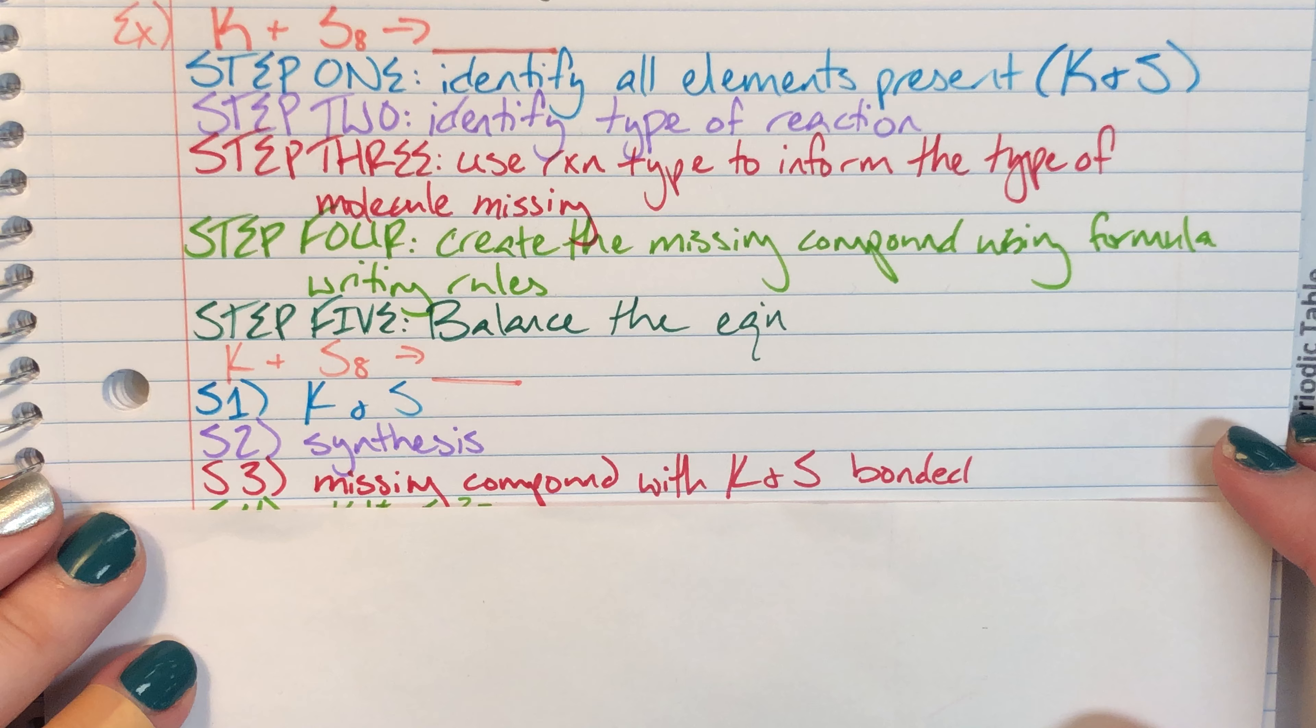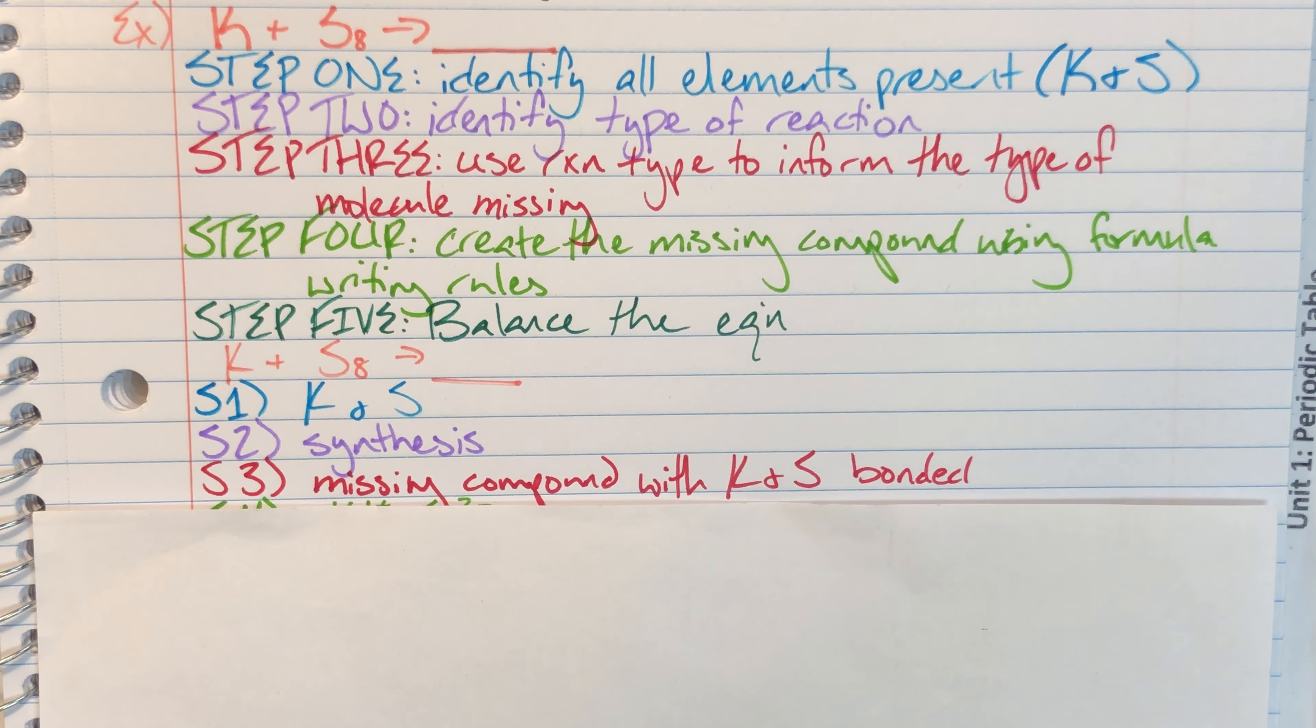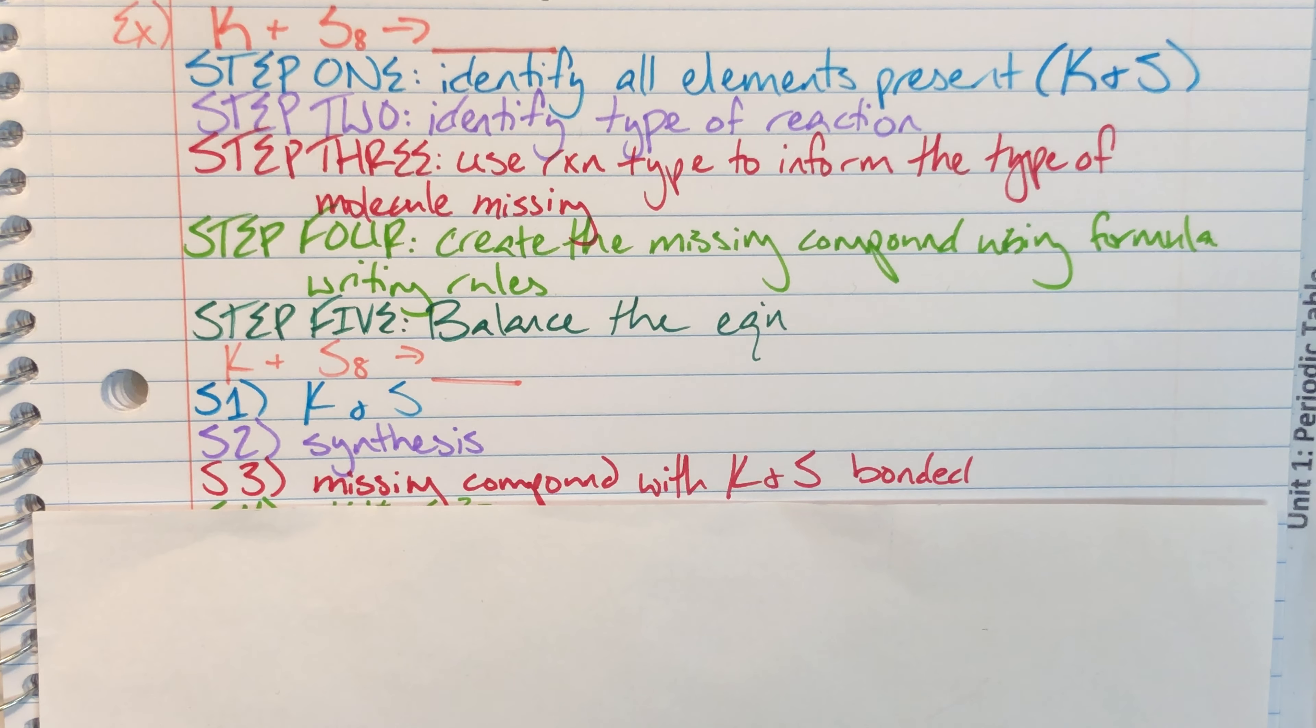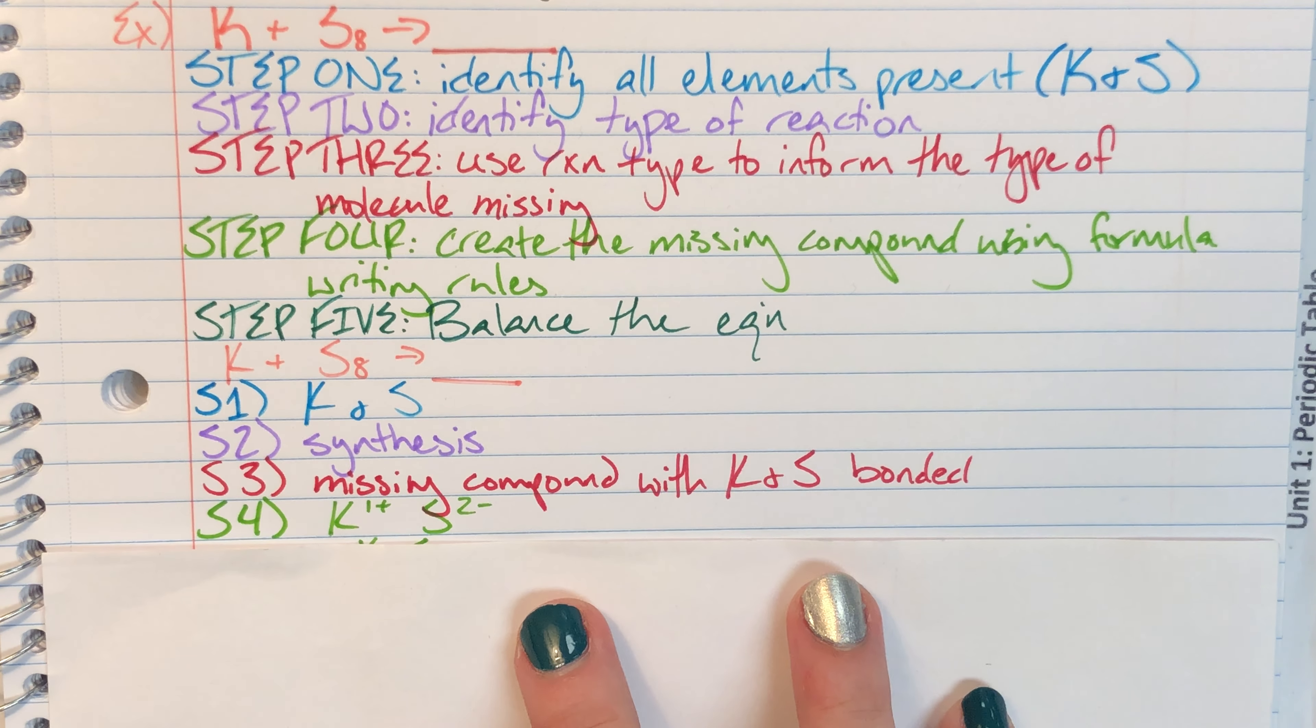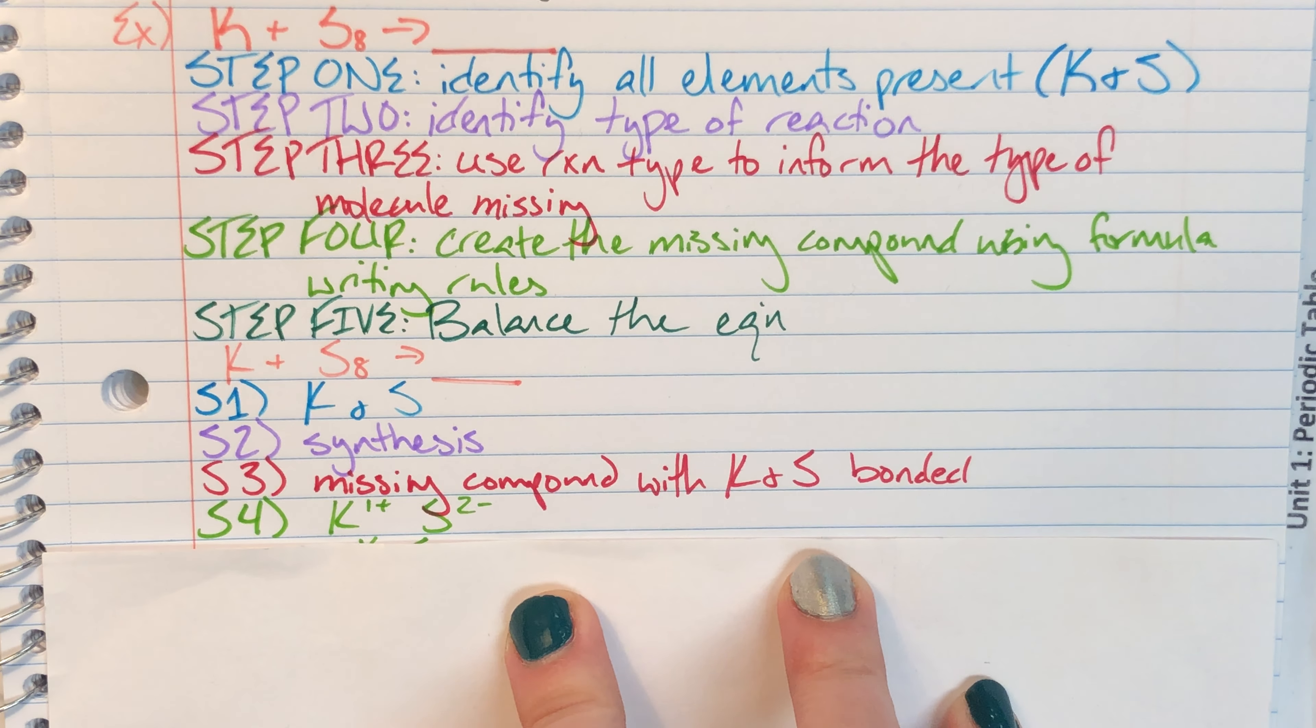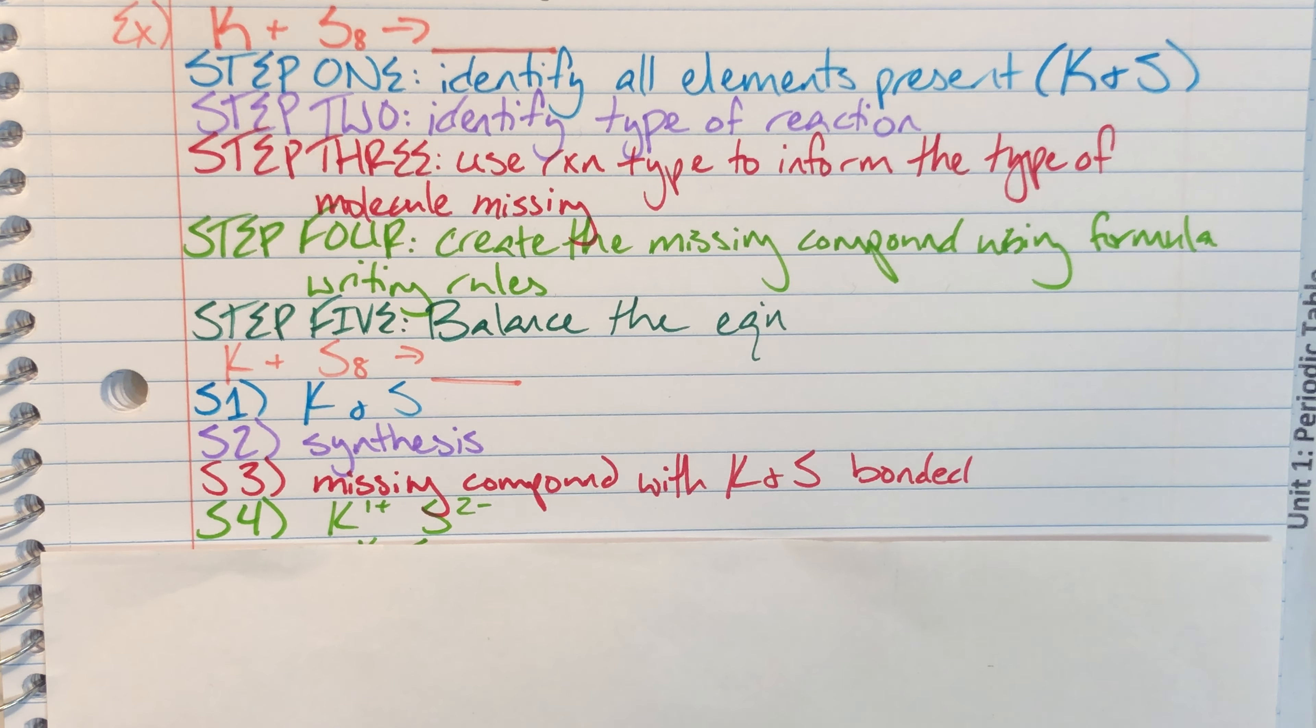Then I am going to use my reaction type to inform the molecule missing, and that is going to be a compound with potassium and sulfur bonded. And then I'm gonna actually go ahead and create that compound using formula writing rules. So potassium and sulfur, this is going to be an ionic compound so that means I need to look at charges.